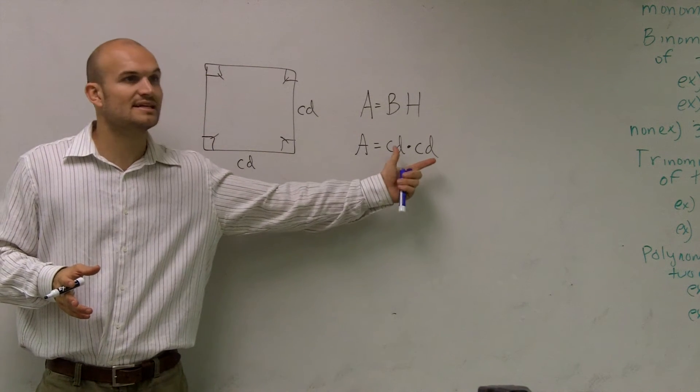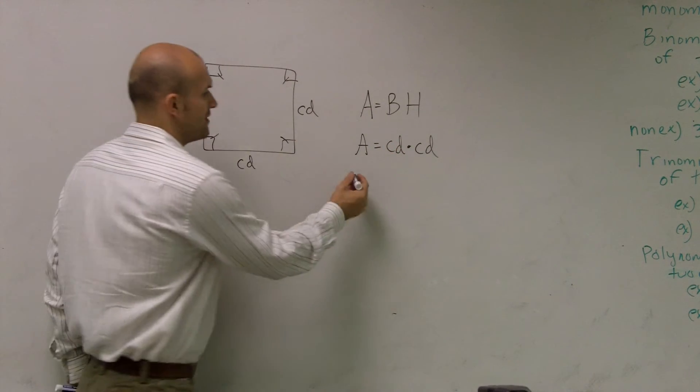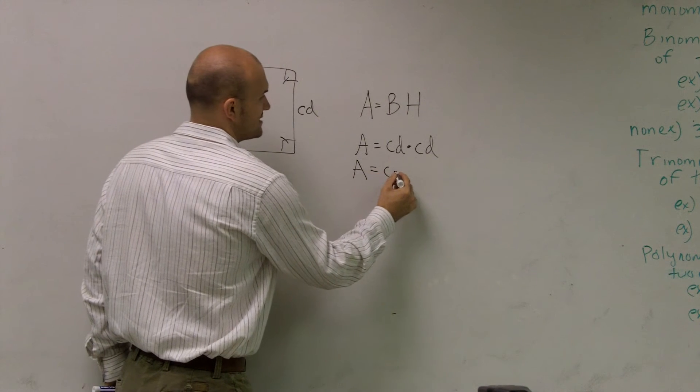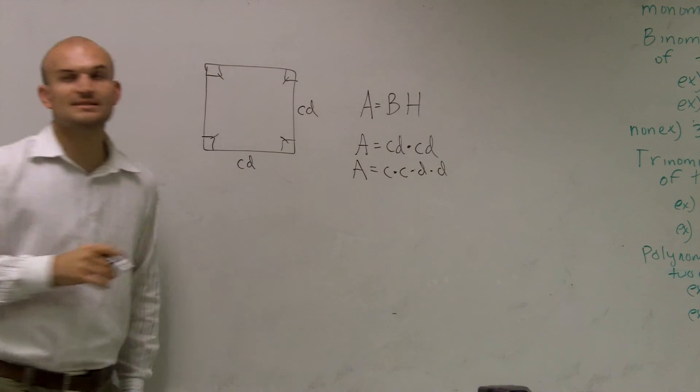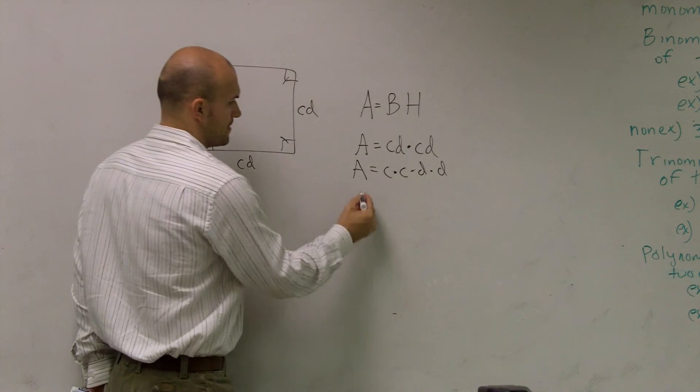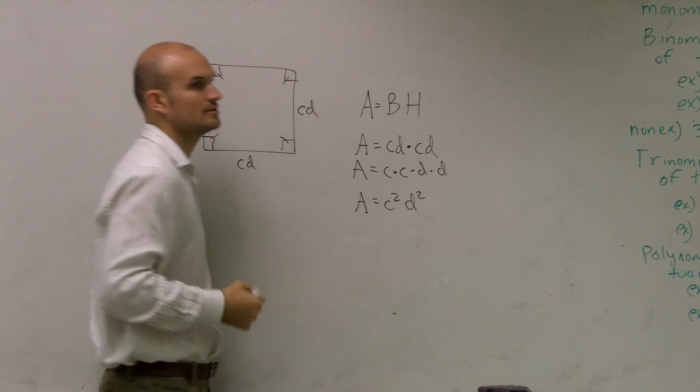So, I can simplify the c and the c, but I can't really do anything else with just c times d. So, if I rewrite this as c times c times d times d, we know that c times c is going to be c squared and d times d is going to provide us with d squared.